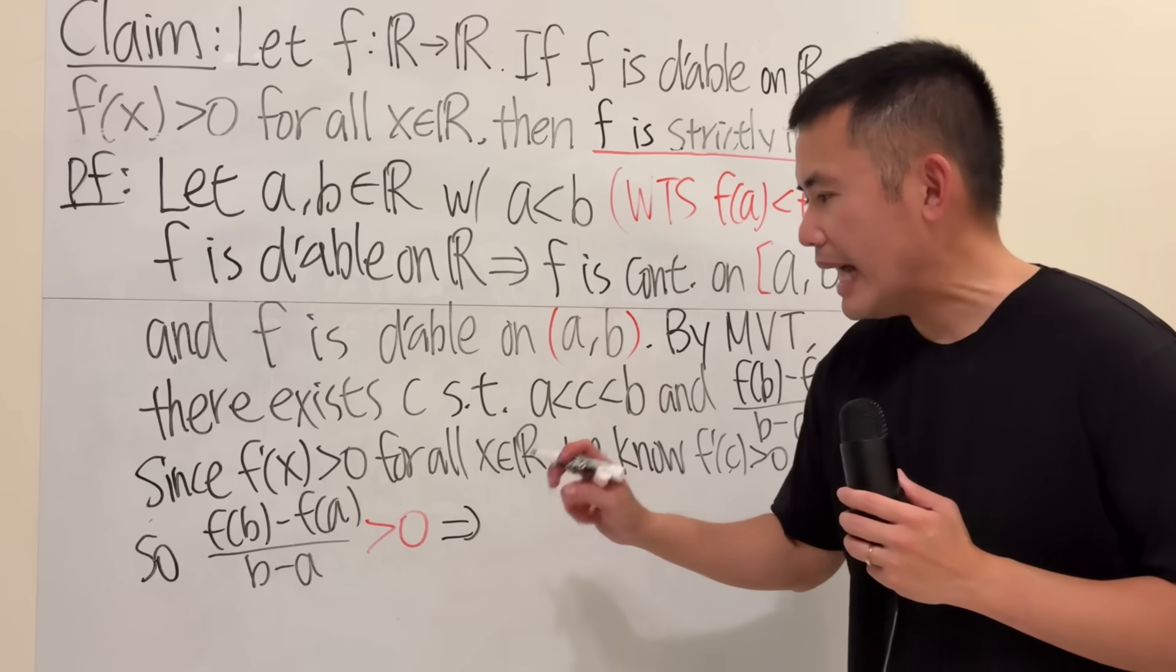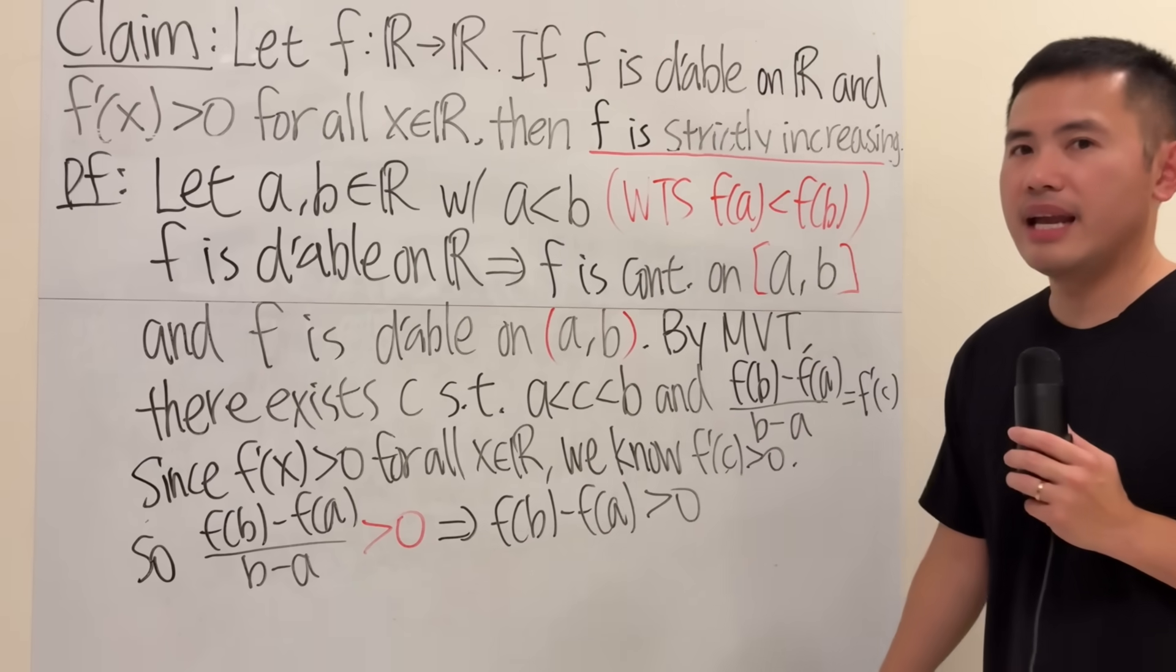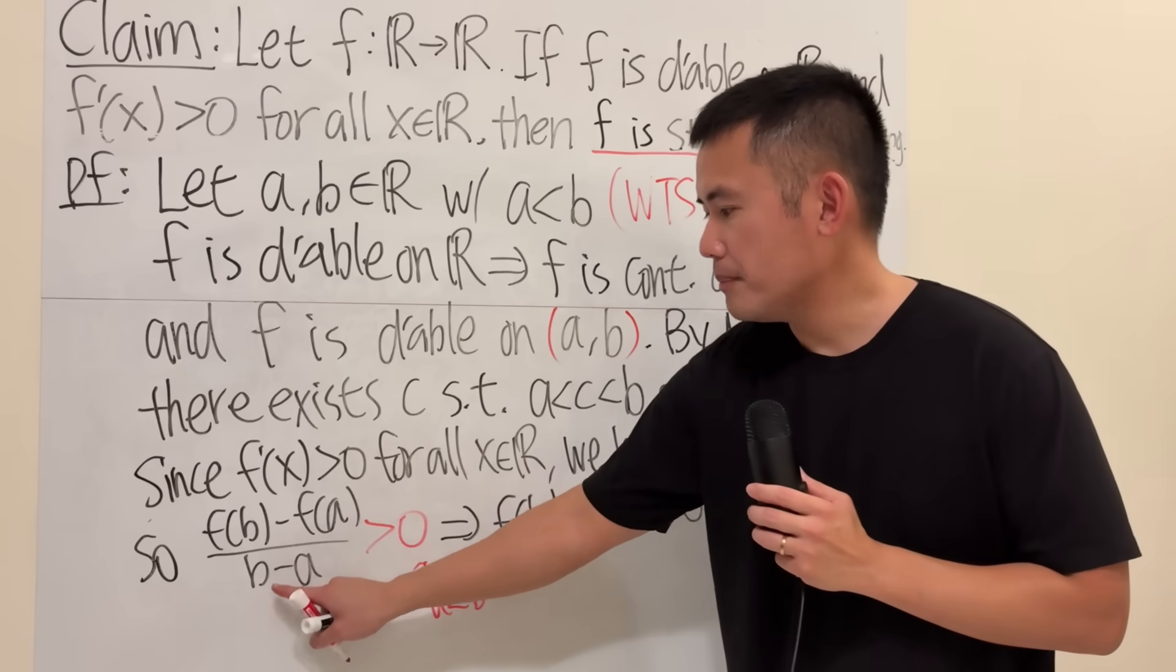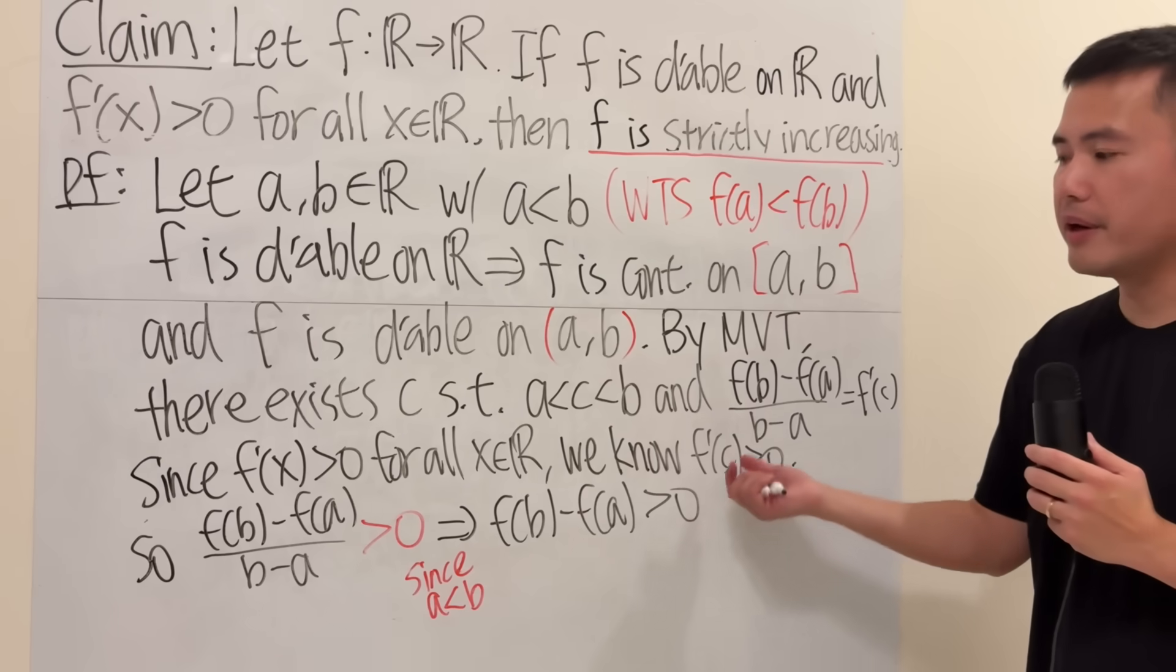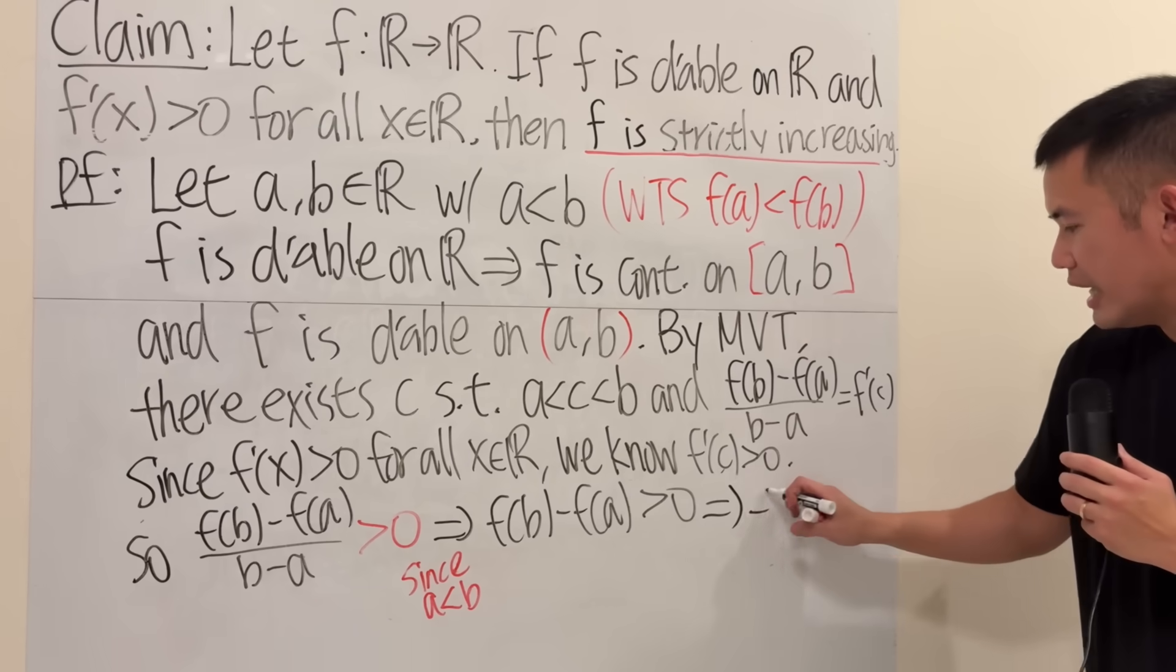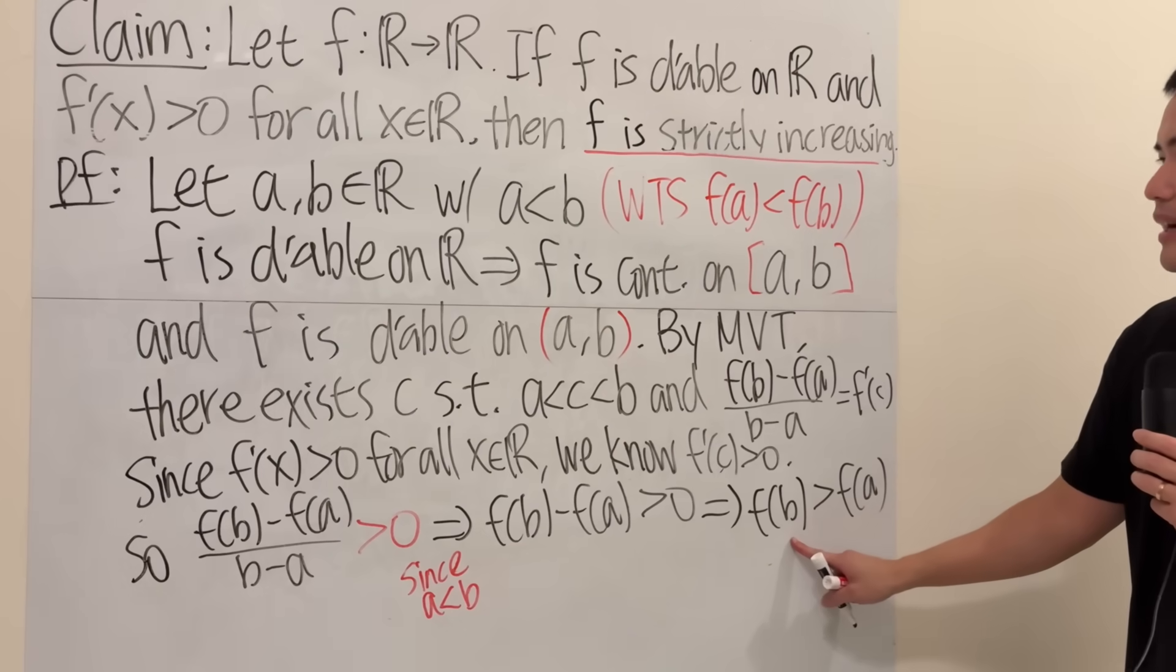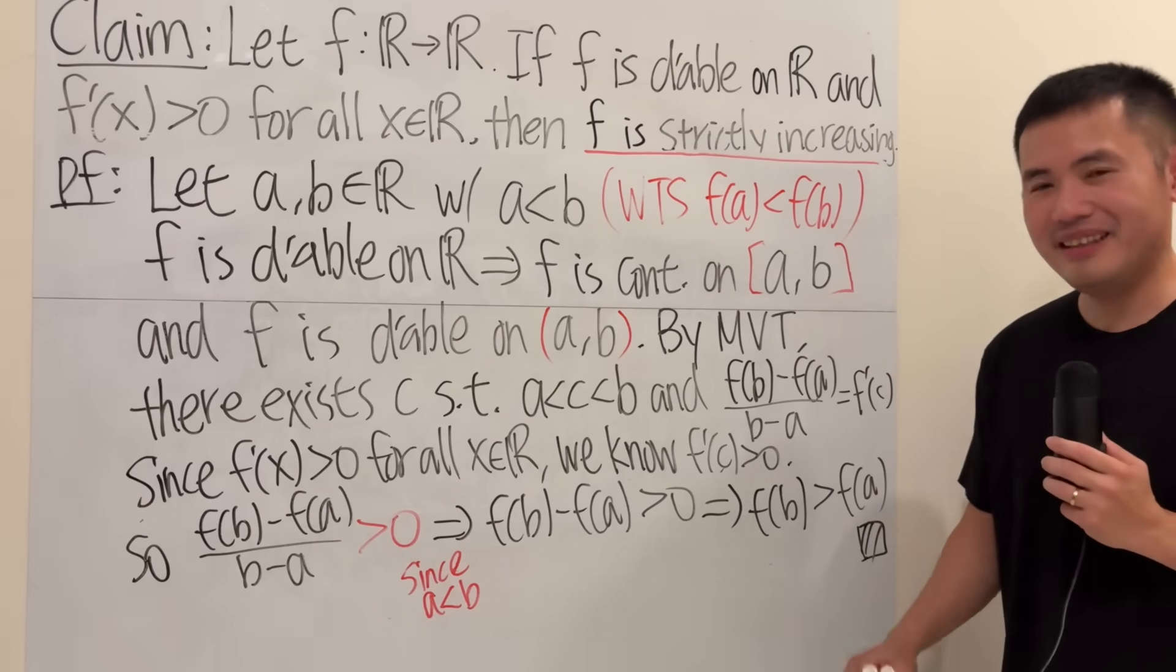And this right here actually implies f of b minus f of a is greater than 0. Why? Well, go back to this inequality here. Since a is less than b, so b minus a is positive. So when you multiply this to both sides, the top has to be bigger than 0. And of course, once we have this, have a look: just bring that to the other side, f of b is greater than f of a. Aha! As you can see, the bigger the input, the bigger the output. And that's exactly what we needed to show. Go ahead, put a box and shade it in. And that's it.